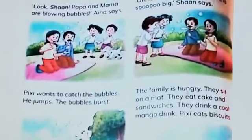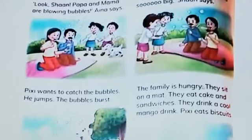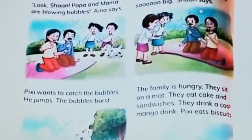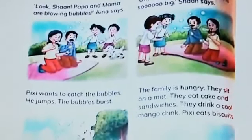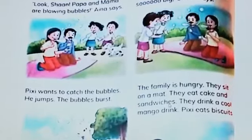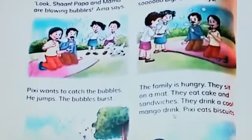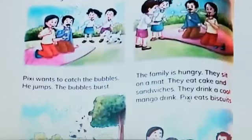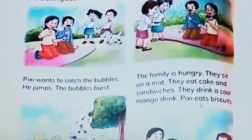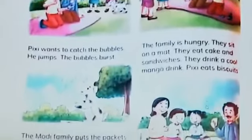The family is hungry — ab jo Modi family thi unko bhook lagti hai. They sit on a mat — voh mat par baithe hain. They eat cake and sandwiches. Do you all like cake? Yes! They drink a cool mango drink — voh ek thandi thandi mango drink peete hain. Pixie eats biscuits — Pixie biscuits khata hai.